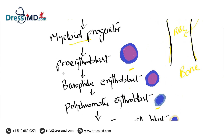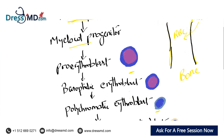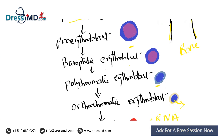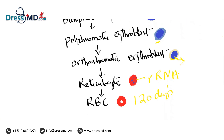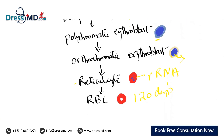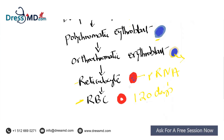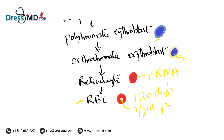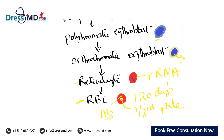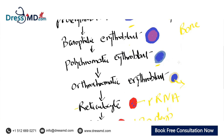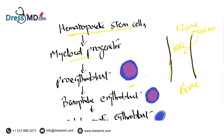To briefly summarize: from the hematopoietic progenitor cells they form the myeloid progenitor cells, then the proerythroblast, then basophilic erythroblast, then polychromatic erythroblast, then orthochromatic erythroblast, then the reticulocyte, and lastly the RBC. Reticulocytes have RNA, and RBCs are fully hemoglobinized. You can recognize an RBC because only the central one-third area is pale, while the whole surrounding area is hemoglobinized.